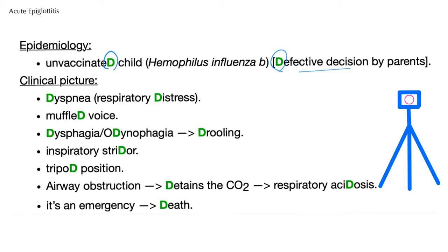Next, clinical picture. Dyspnea or respiratory distress. Muffled voice. Dysphagia, which is difficulty swallowing. Odynophagia, which is painful swallowing — this will lead to drooling because the kid cannot swallow, so the saliva will drool.